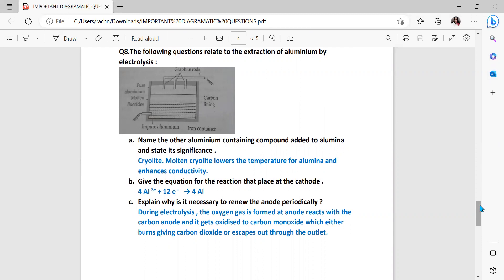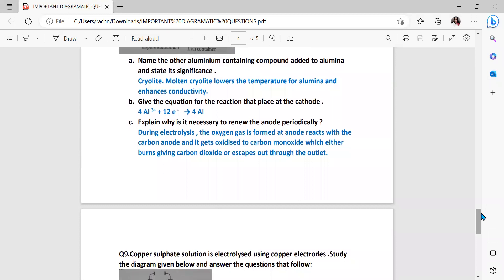Give the equation for the reaction that takes place at the cathode. It is your aluminum ions. At cathode reduction occurs, so the gain of electrons will occur and you will get solid aluminum. Explain why is it necessary to renew the anode periodically. We have already discussed. During the electrolysis the oxygen gas is formed at anode, reacts with the carbon anode and it gets oxidized to carbon monoxide which either burns giving carbon dioxide or escapes out to the outlet.